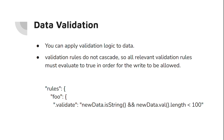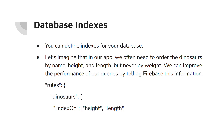You can also apply validation logic to your data. We have .validate as one of the four rule types. In this example we have .validate with newData.isString() and newData.val().length — so if the data is a string and the length is less than 100, it is going to be accepted for a write operation in the database. This is how you can enforce validation logic on your data as well.